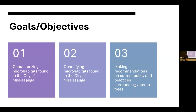There were three main objectives for my project. The first was to characterize the microhabitats found in the city of Mississauga. The second was to quantify those microhabitats and get the numbers of them. The third objective was to make recommendations on current policy to help these veteran trees stay standing longer.